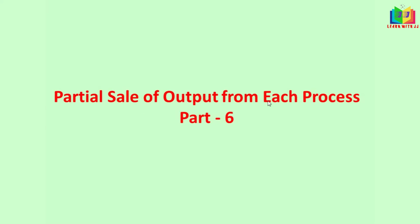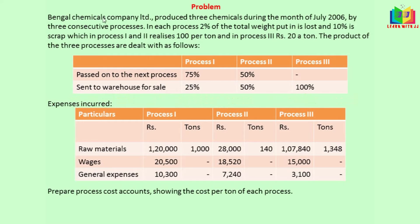Partial sale of output from each process. 10% is scrap, which in Process 1 and 2 realizes Rs.100 per ton, and in Process 3, Rs.20 per ton. The products of the 3 processes are dealt with as follows.